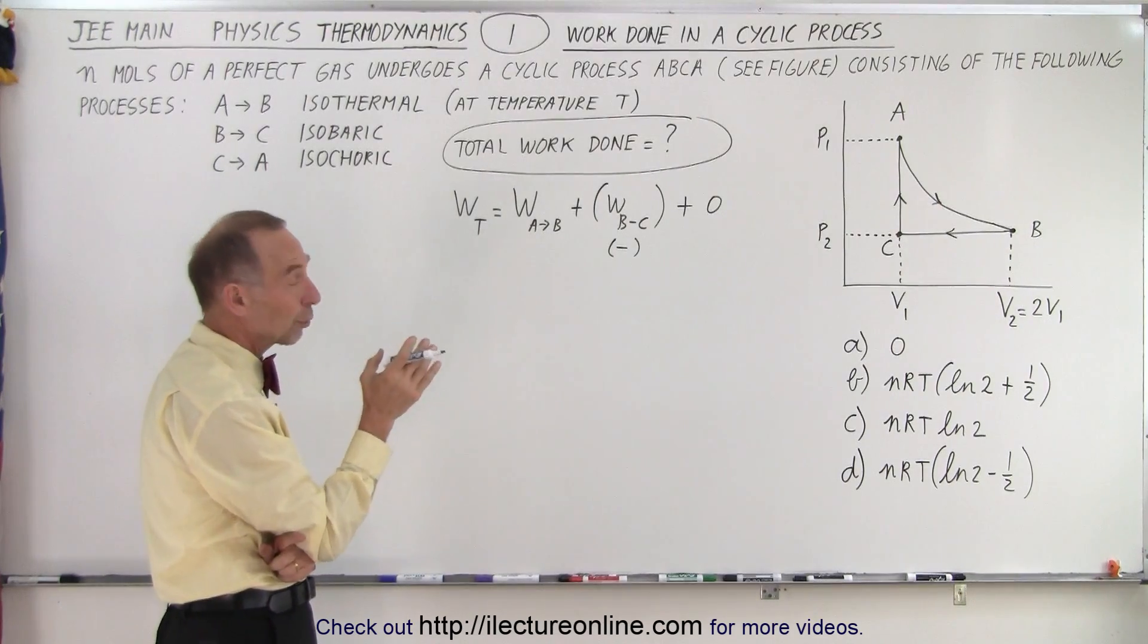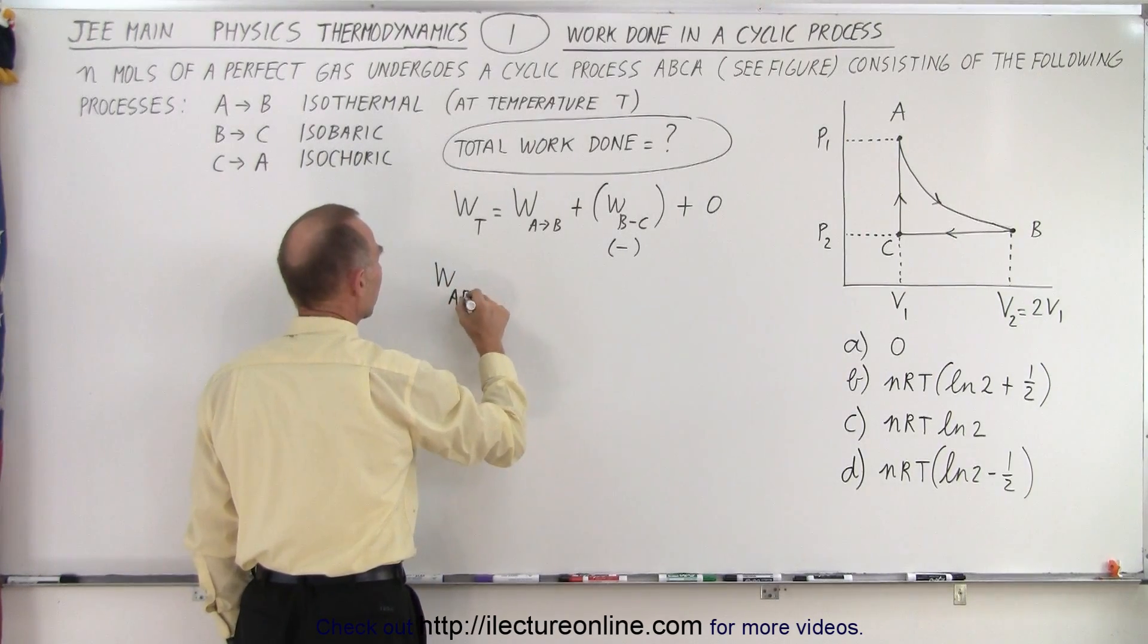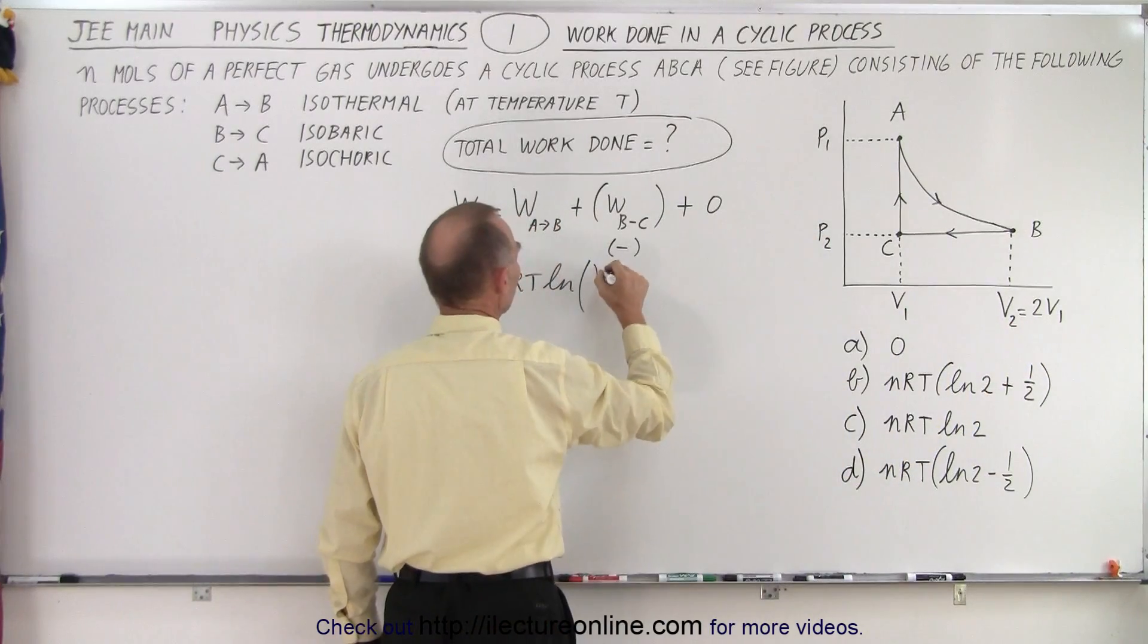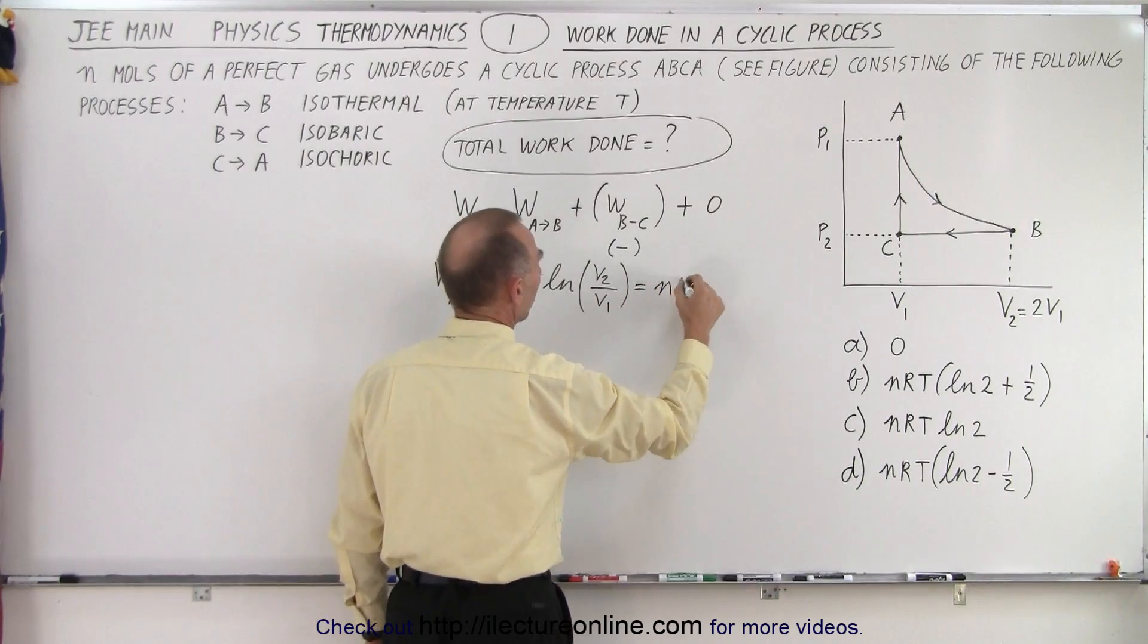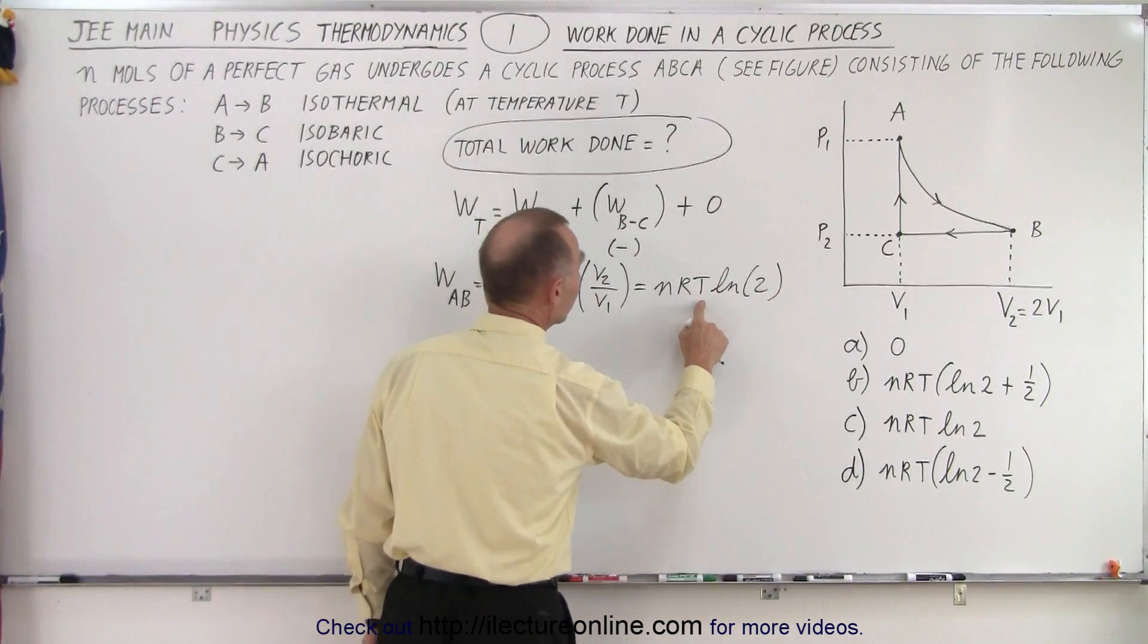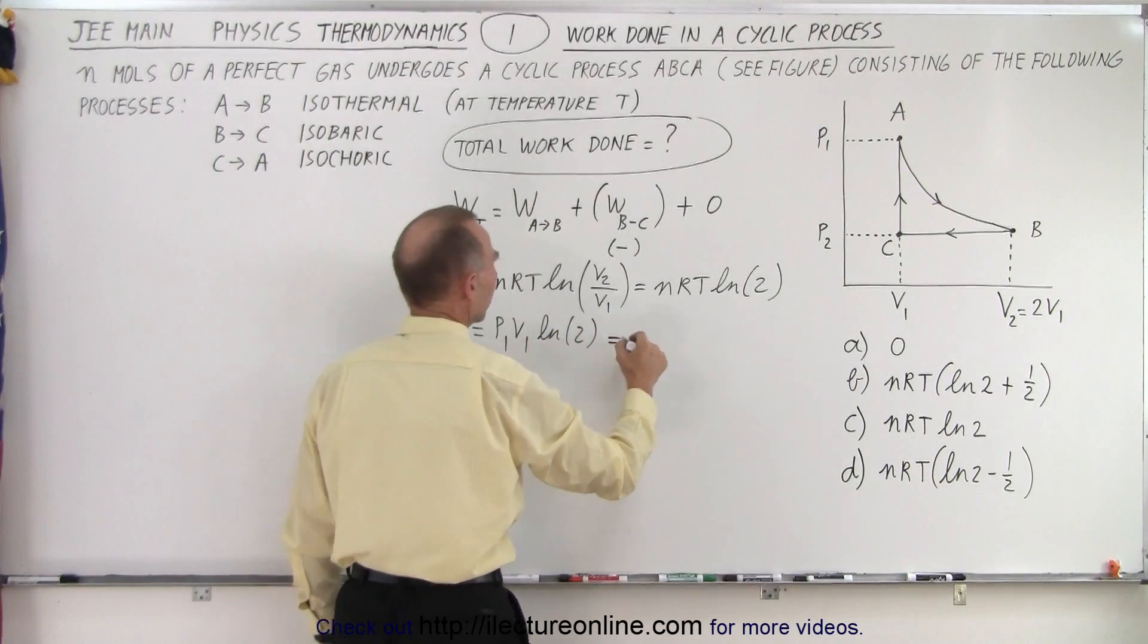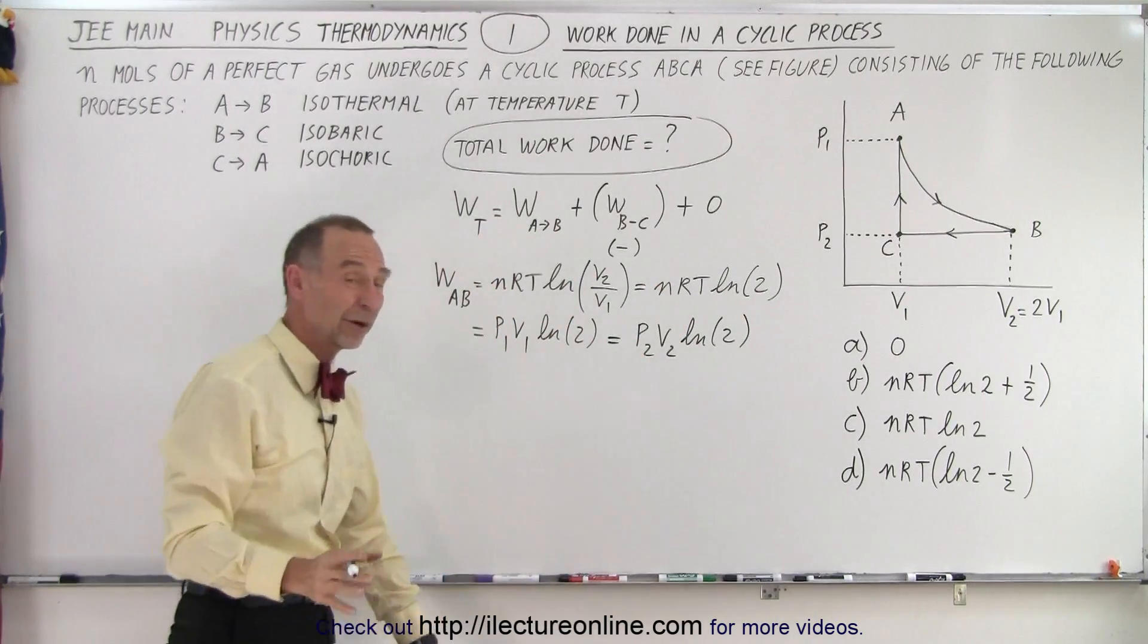So how do we calculate the work done going from A to B? We know there's three equations. The work done from A to B is equal to nRT times the natural log of the ratio of the volumes, V2 over V1. And since V2 is twice V1, this would be equal to nRT times the natural log of 2. Or we can replace nRT by P1V1, so this can also be written as P1V1 times the natural log of 2, and that can also be written as P2V2 as the natural log of 2. So those are the three possible equations we could use.